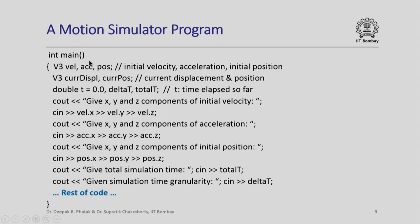Here is an outline of a possible motion simulator program. We have three three-dimensional vectors: velocity, acceleration, and position, denoting the initial velocity, acceleration, and initial position — each of type V3. Current displacement and current position are also of type V3. Delta t, the granularity of simulation time, is of type double. Total t, the total simulation time, is also of type double. And t, which tracks time elapsed so far, is initialized to 0.0. We read in the x, y, z components of initial velocity, acceleration, initial position, then total t and delta t.